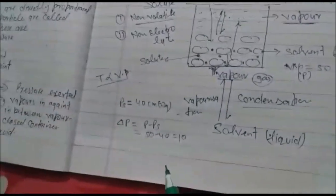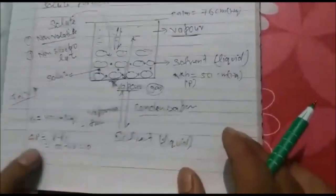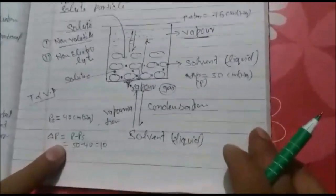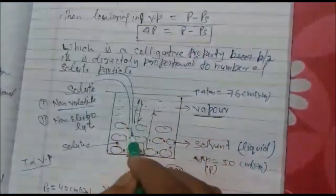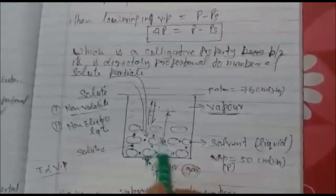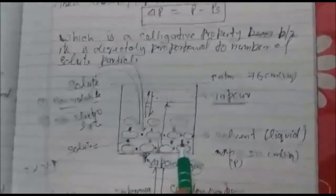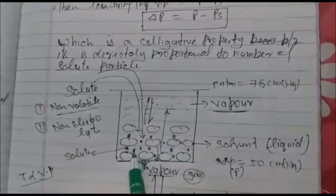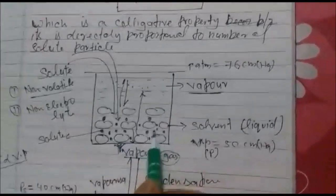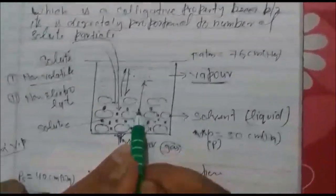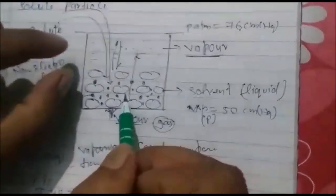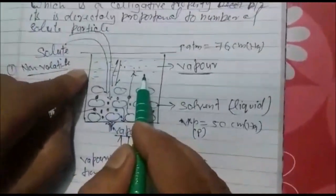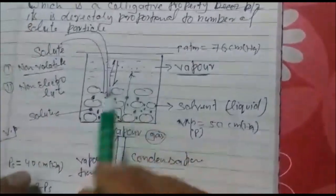Now we are going to explain why lowering in vapor pressure is a colligative property. When you put again solute, it occupies more space and it creates more hindrance in the path of solvent which are going further vaporization. So again very less vapors are formed.